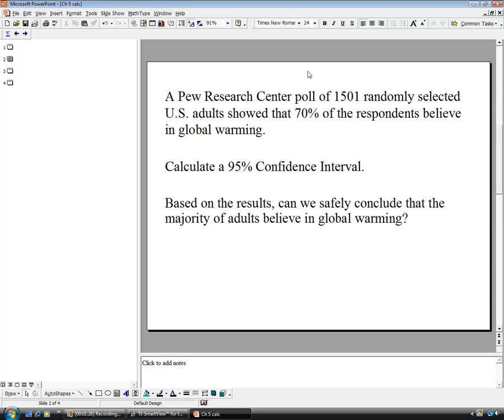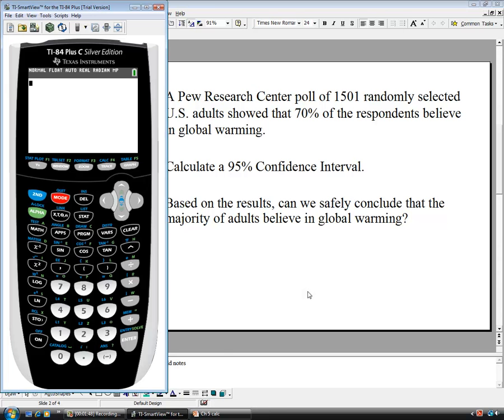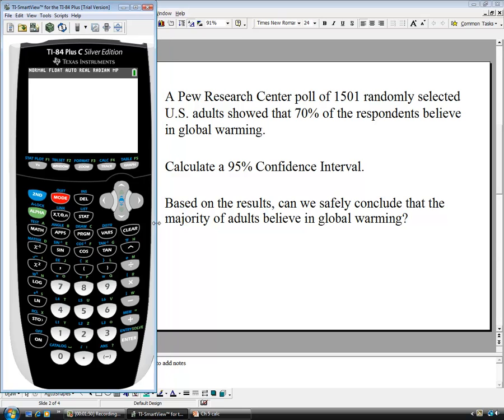For the first one, it says a Pew Research Center poll of 1,501 randomly selected U.S. adults showed that 70% of the respondents believe in global warming. We need to calculate a 95% confidence interval and use that to determine if a majority of adults believe in global warming. Here is our calculator.